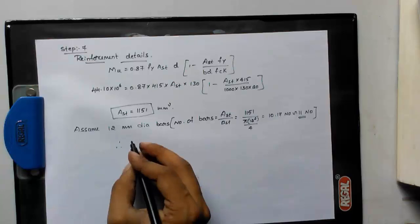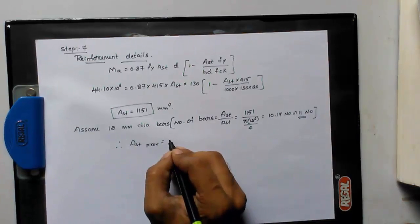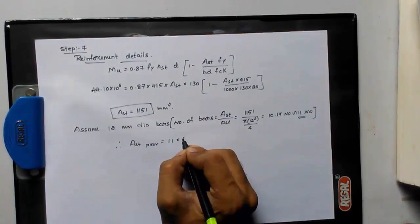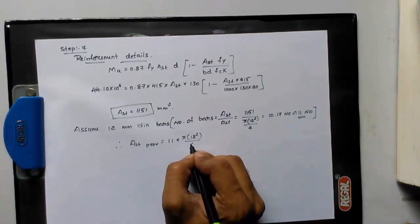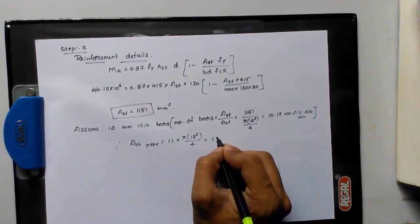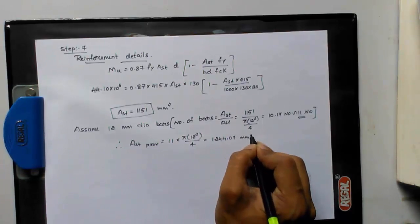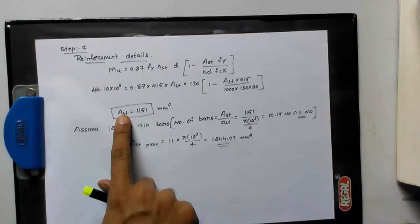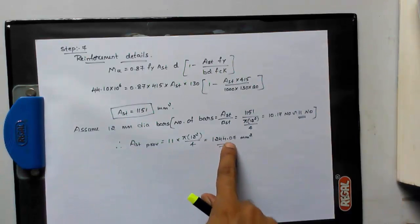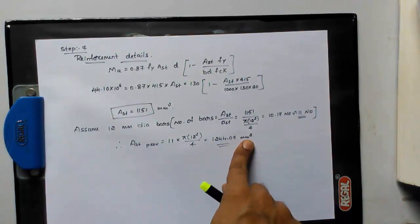Therefore, what is AST provided? Provided is equal to 11 numbers into pi into 12 square by 4. You will get 1244.07 mm square. This is the AST required. The AST provided is 1244.07 mm square.